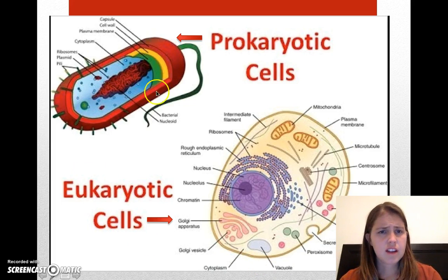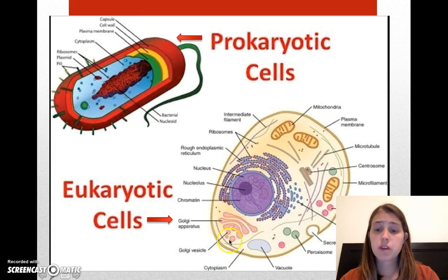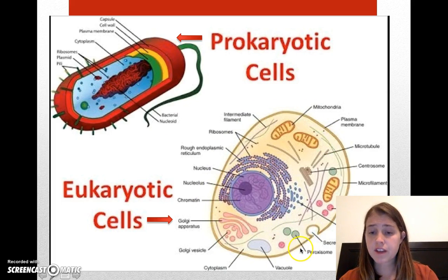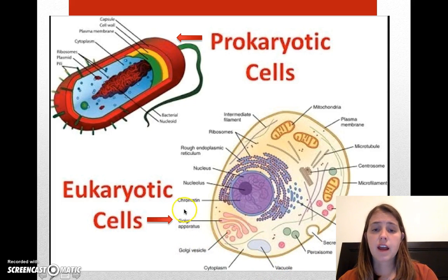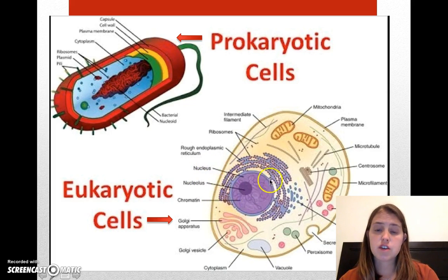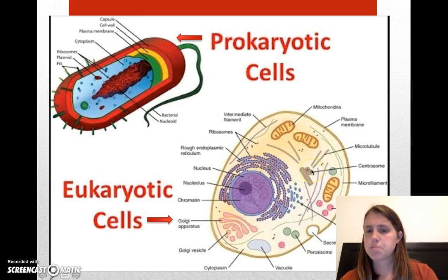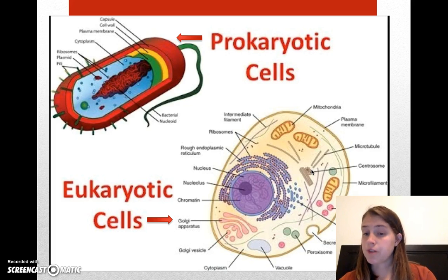Here's our prokaryotic cell, and notice it just looks a lot simpler. There aren't as many compartments — there are lots of small dots, but that's pretty much it. Here's the eukaryotic cell, and it has a lot more things in it: the vacuole, the Golgi apparatus, chromatin and the nucleolus within the nucleus, a nuclear envelope, endoplasmic reticulum, all this stuff. It's a super organized cell — things are very compartmentalized and all do their own specific functions.